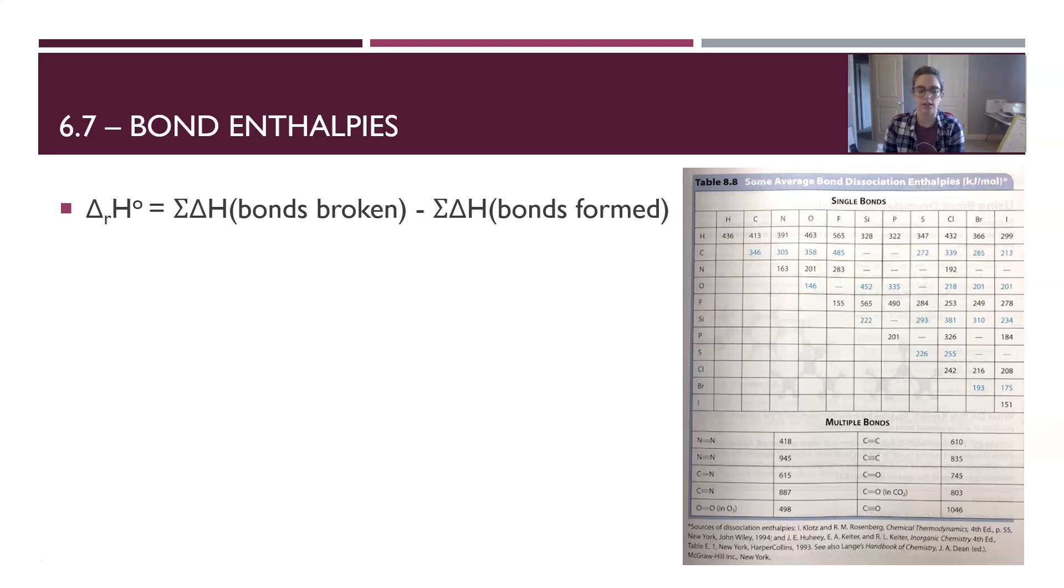When we calculate the enthalpy of reaction, we're going to look at the sum of the bonds that are broken minus the sum of the bonds formed. So we're going to look at how much energy is involved in breaking all of the bonds and then how much energy is involved in forming all of the bonds. You always do broken minus formed.